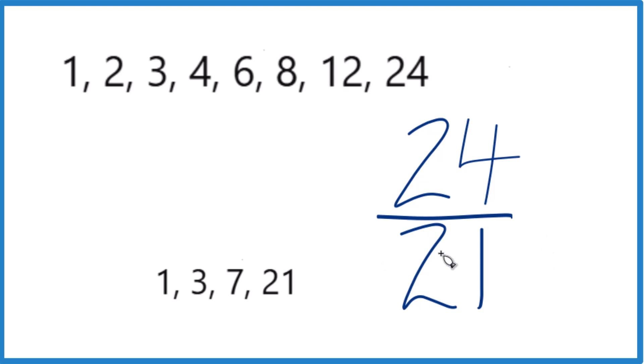So we're looking for the greatest common factor. 21, that's not there. 7, here's 3 right here and here. So 3, that's the greatest common factor.